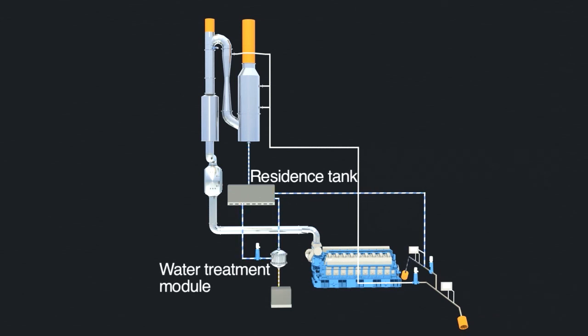After the scrubber, the water is led into the residence tank and then pumped into the hydrocyclone. In port, reaction water can be added to adjust the pH in the discharge water.